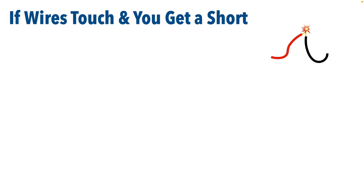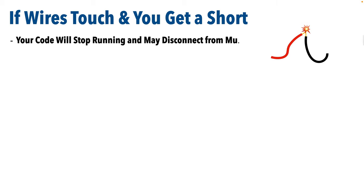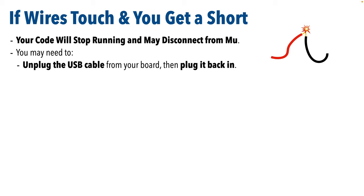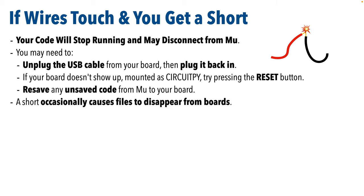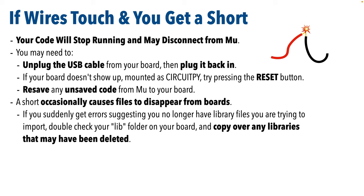Before we plug our board into our USB cable, now's a good time to review some board care and safety tips. First, the metal parts of wires in your project should never touch — if that happens while the board is powered on, the board could short out. It's unlikely to damage your board, though that is possible. If your wires do touch and you get a short, your code will definitely stop running and your board will probably disconnect from Mu and your computer. You can just unplug and re-plug your board back in, which will usually work. Sometimes you have to press the reset button to reboot CircuitPython. In rare cases, a short has caused me to lose files saved to the board, so if you start getting errors about missing libraries, double-check your lib folder and re-import any files that might have gotten deleted.